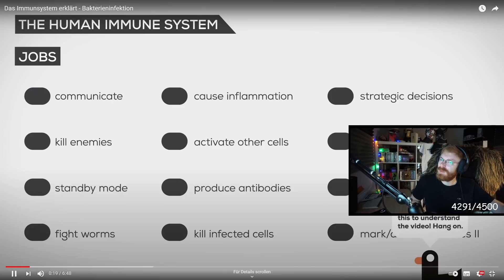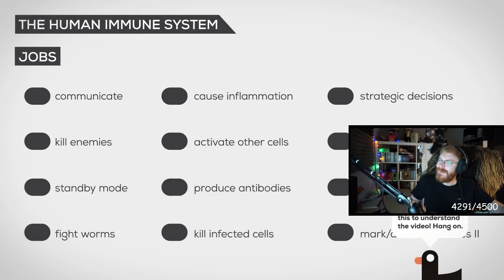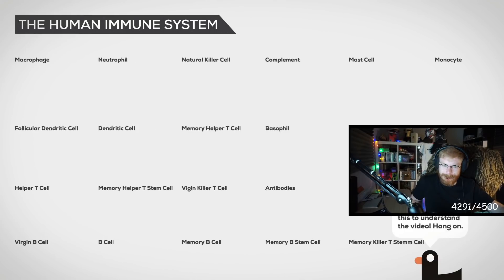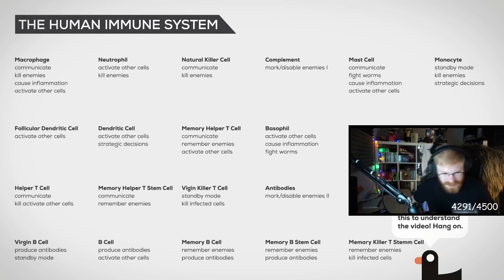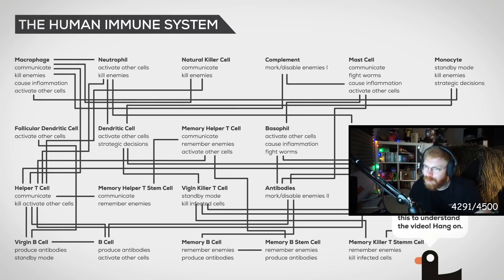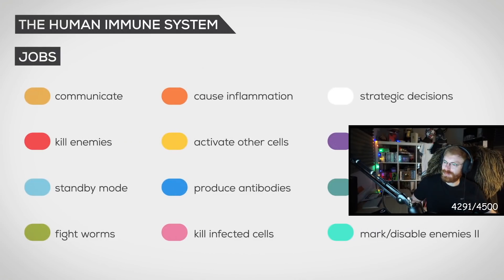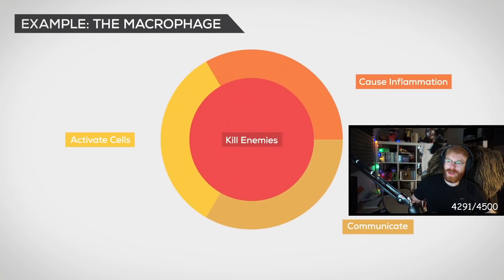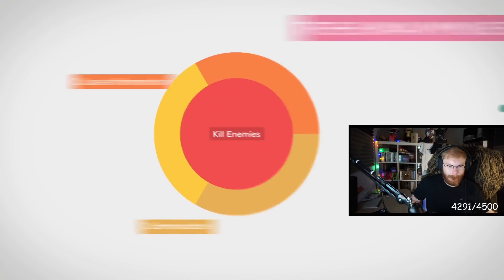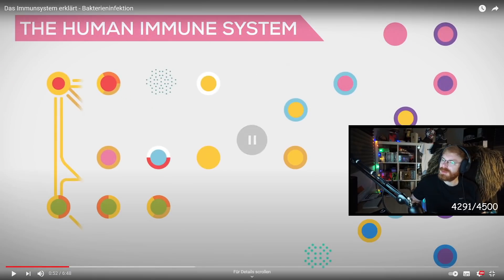For this video let's assume the immune system has 12 different jobs—for example, kill enemies, communicate, etc.—and it has 21 different cells and two protein forces. These cells have up to four different jobs. Let's assign them. Here are the interactions. Now let's make this understandable. First of all, let's add colors to the jobs. Now let's illustrate the cells. The central color represents the main job of the cell while the surrounding ones represent secondary duties. Now the immune system looks like this.